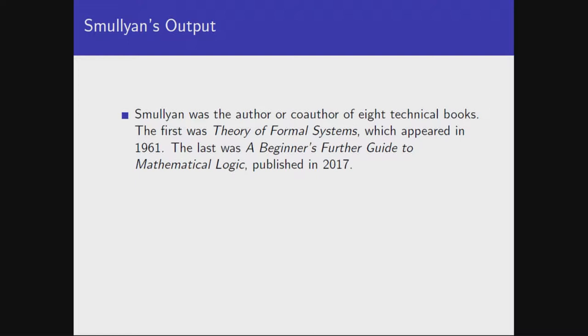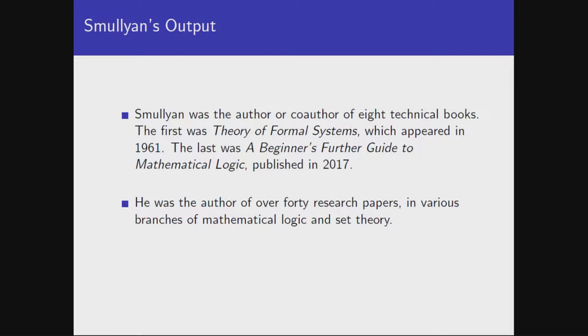In the many obituaries for him that appeared after his death, everyone talked about his popular-level books and his logic puzzles and all that kind of material. But he was a very accomplished mathematician, working in areas of logic and set theory. In particular, he was the author or co-author of eight technical books, the first one being Theory of Formal Systems, published in 1961, and the last one being A Beginner's Further Guide to Mathematical Logic. He was also the author of over 40 research papers in mathematical logic and some in set theory. That's a pretty impressive output, especially when you consider just how late Raymond started in mathematics — he didn't get his PhD until he was already 40 years old. And many of those papers have been very influential to people in the field.